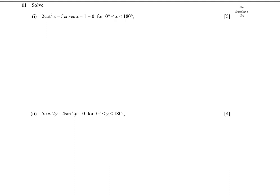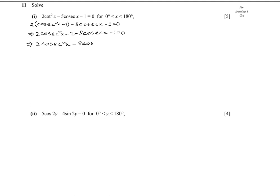We can write 2cot²x using the identity cot²x = csc²x minus 1, so we write 2(csc²x minus 1) minus 5cscx minus 1 equals zero. Expanding: 2csc²x minus 2 minus 5cscx minus 1 equals zero, giving us 2csc²x minus 5cscx minus 3 equals zero.